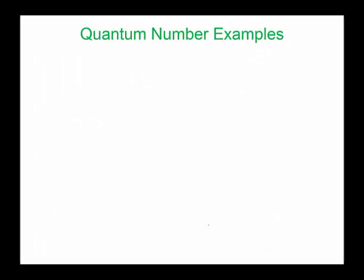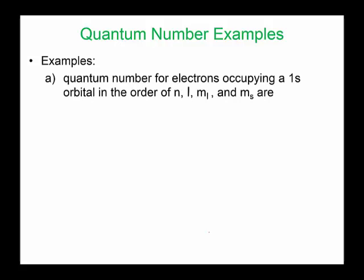Let's try some practice questions. For electrons occupying a 1s orbital, there could be two different quantum numbers because it's 1s2 — you could have the 1s1 electron or the 1s2 electron, each with their own quantum numbers. Those are the only two possibilities. For an electron in a 1s orbital, it's either spinning clockwise or counterclockwise, and the magnetic number is zero because there's only one orbital for an s sublevel.